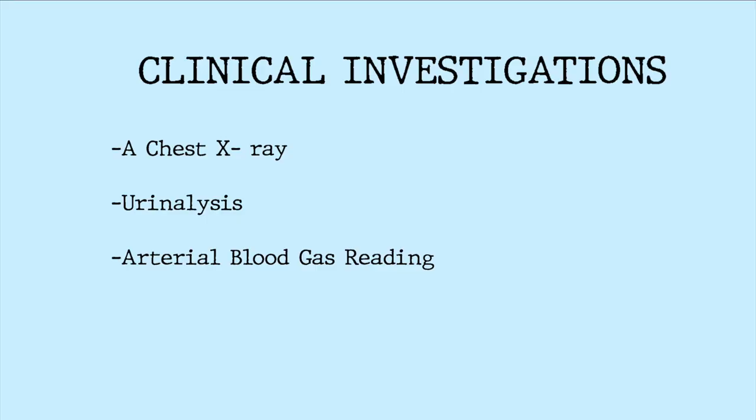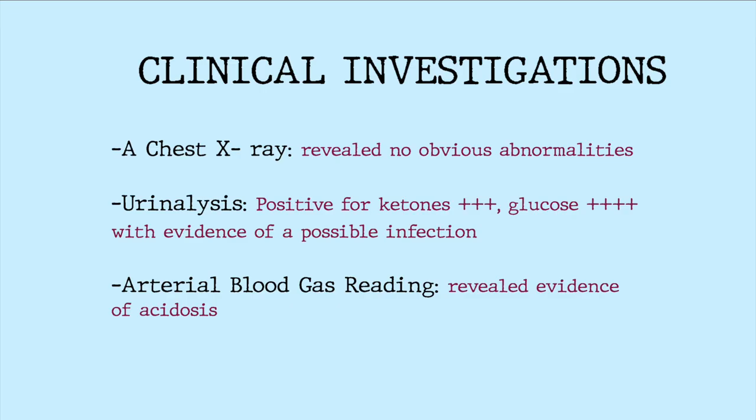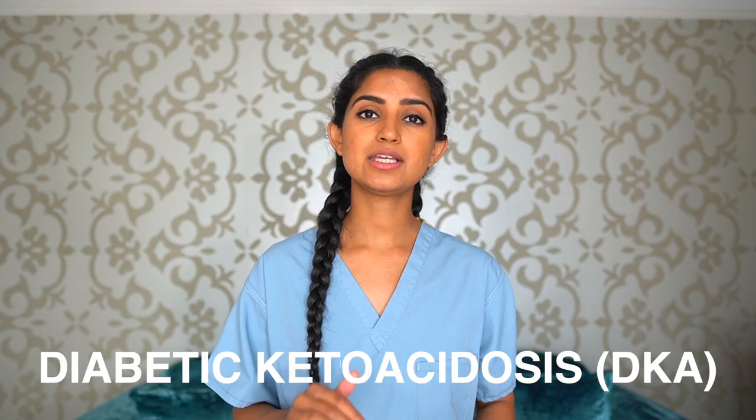After you have escalated this information to the relevant medical team, the following investigations were carried out: a chest x-ray, urinalysis, and an arterial blood gas reading. The chest x-ray revealed no obvious abnormalities. The urinalysis was positive for ketones and glucose with evidence of a possible infection, and the ABG reveals evidence of acidosis. By escalating care when you identified an abnormal result, the team were able to identify that Lisa is showing features associated with diabetic ketoacidosis, including hyperglycemia, ketonemia and acidosis. A skill which takes less than five minutes to carry out has the potential to save someone's life — this is why nurses play such an important role in the management and escalation of care when we see something that doesn't look quite right.